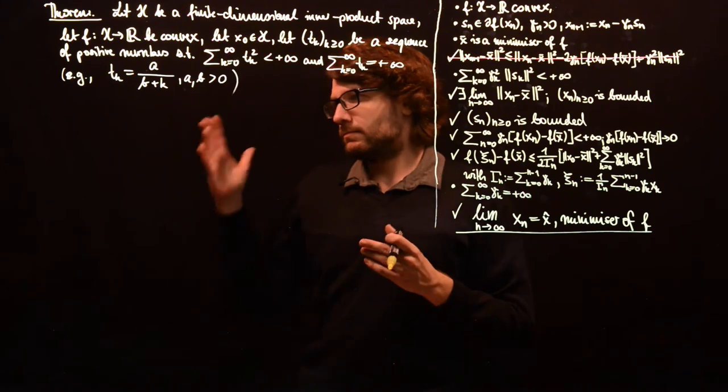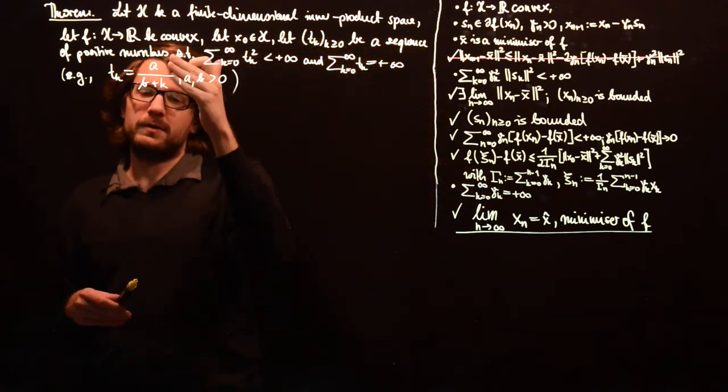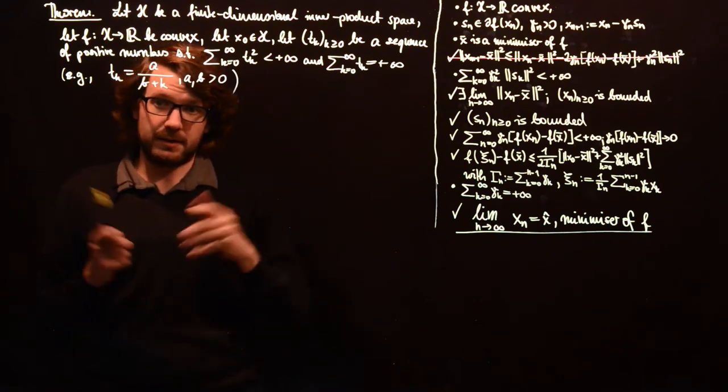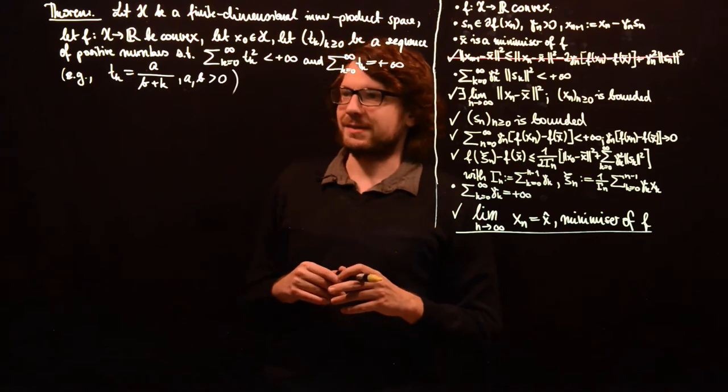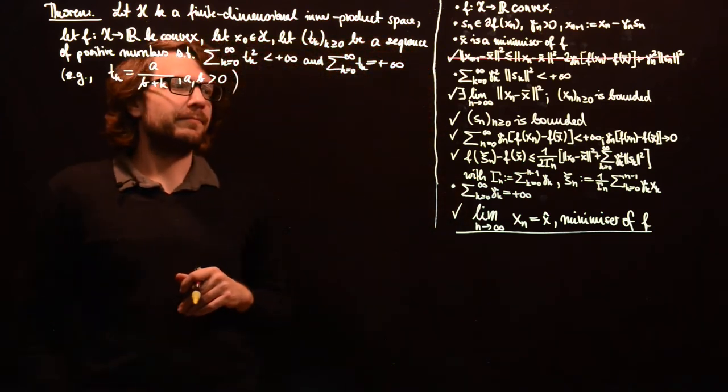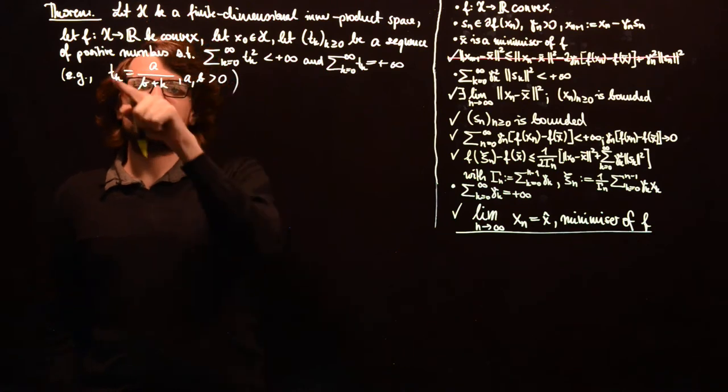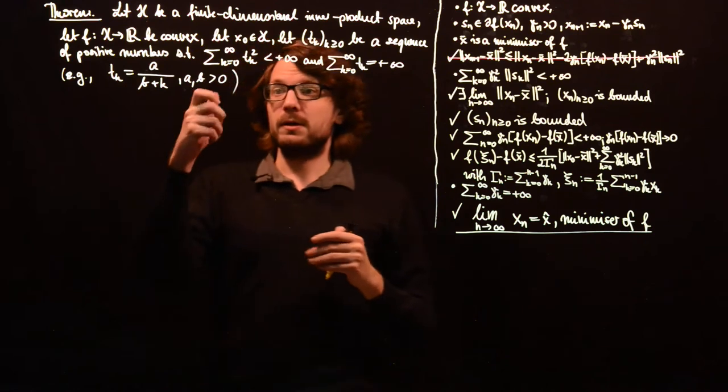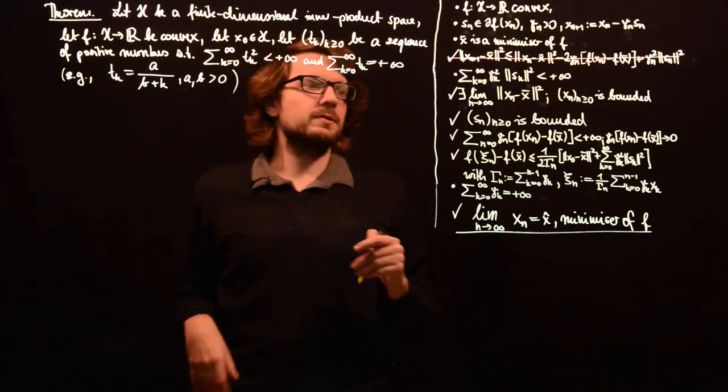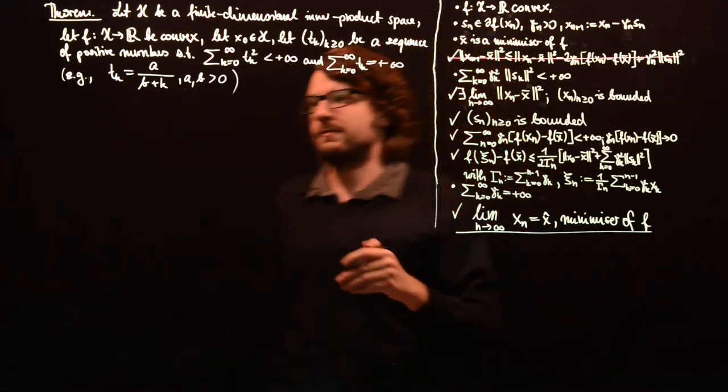And the sum, as is also known, of 1 over k plus 1 squared is something like pi squared over 6. So, this sequence with some values a and b which you can choose will satisfy those two conditions and therefore can be chosen as the sequence gamma_k times norm of s_k.